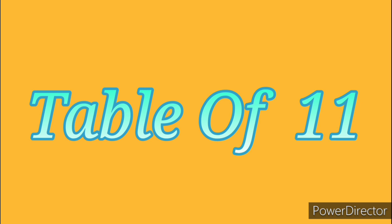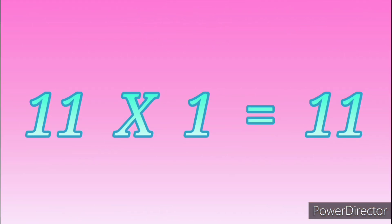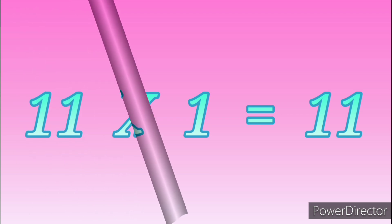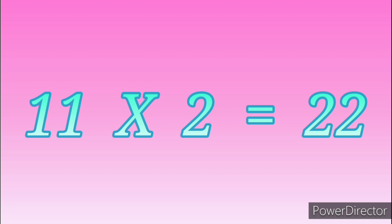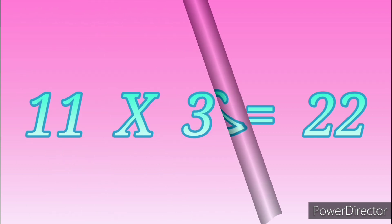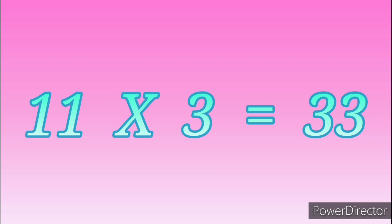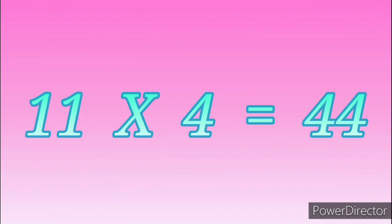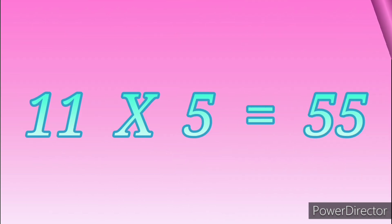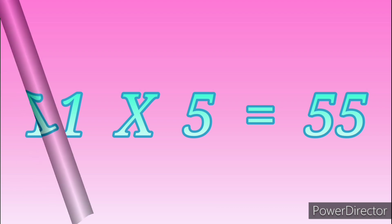Table of 11. 11 ones are 11. 11 twos are 22. 11 threes are 33. 11 fours are 44. 11 fives are 55.